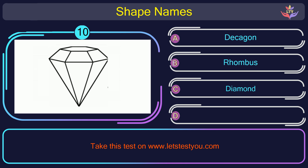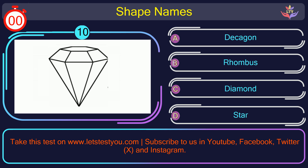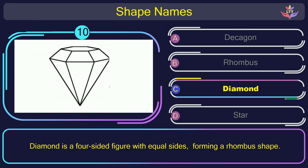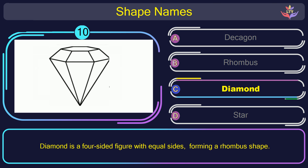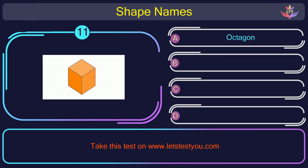Question number 10. Could you figure out the name of the shape in this picture? The correct answer is option C. Diamond. Diamond is a four-sided figure with equal sides, forming a rhombus shape.